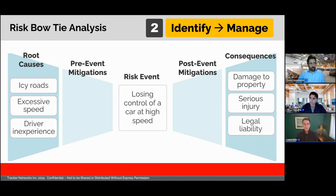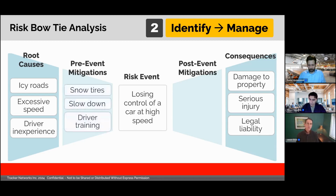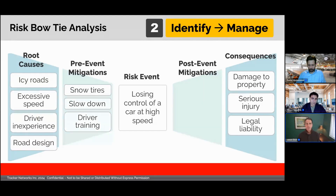In a business example, these consequences would relate to the objectives of whatever activity is behind the risk assessment. Once I've done my root cause analysis, I can identify and map my pre-event mitigations. You'll notice how the mitigations actually align with the root causes — they don't have to be one-to-one, but that's conceptually how you think about them. For example, I might identify that the road is designed in a way that encourages people to speed, and so I might decide to modify the road design with traffic calming.